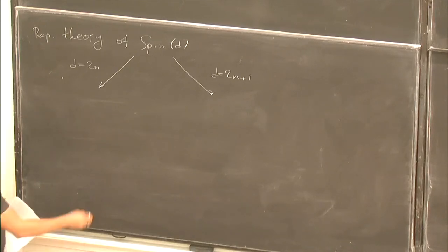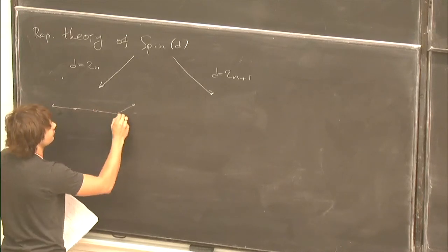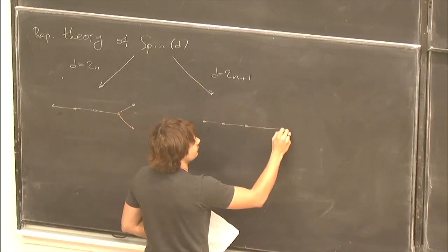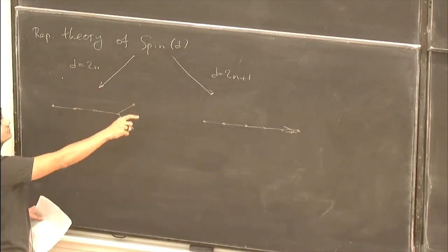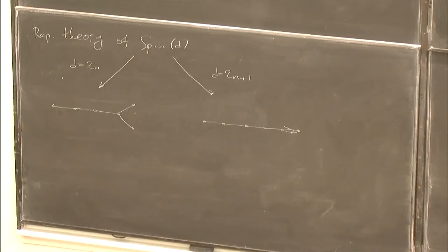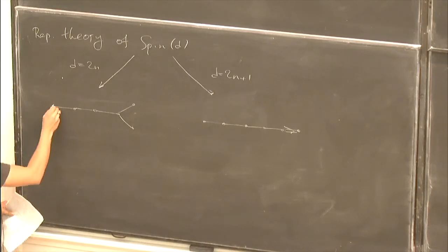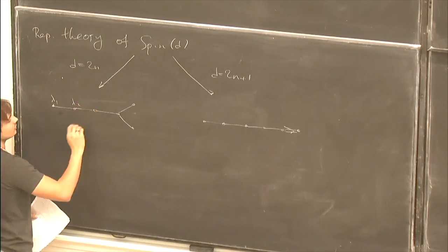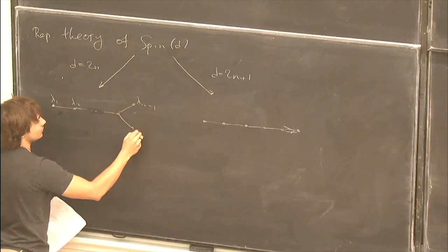We usually draw Dynkin diagrams for these groups. I will not need to know anything about them except that they have nodes. The number of nodes is equal to N, which is called the rank of the group. All finite-dimensional representations of the group are classified by non-negative integers assigned to each node — we'll call them lambda_1, lambda_2, generally up to lambda_N.